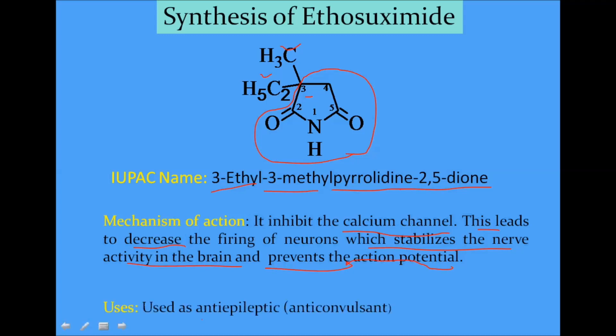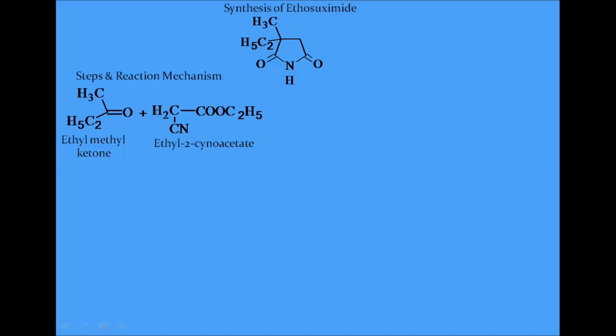What is the usage? It is used as an anti-epileptic, meaning anti-convulsant. Now, come to the synthetic part. This is the structure of ethosuximide. These are the starting materials.